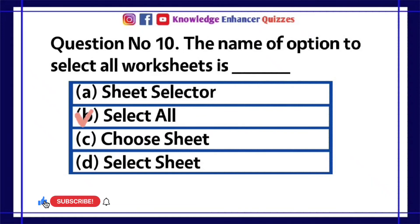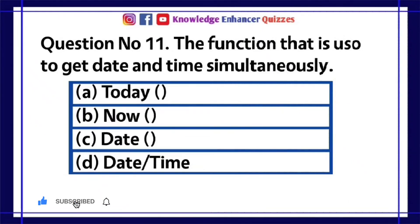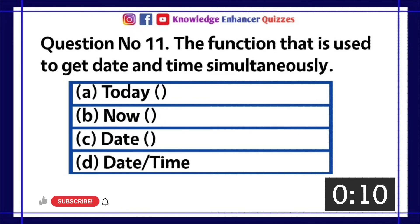Option B is the right answer. Question number 11: The function that is used to get date and time simultaneously: A. TODAY(), B. NOW(), C. DATE(), D. DateTime.